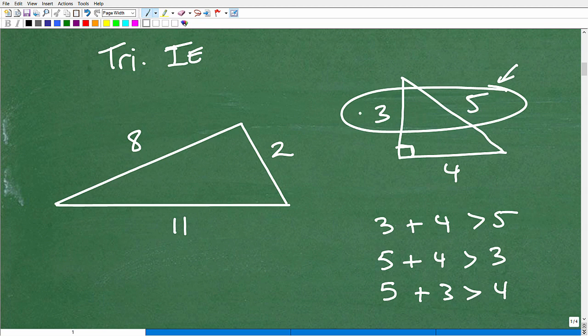So when we take any two sides of a triangle, it's always going to be greater than the other side that you left out. Okay. This is the triangle inequality. This is true in all triangles. Okay. All triangles.